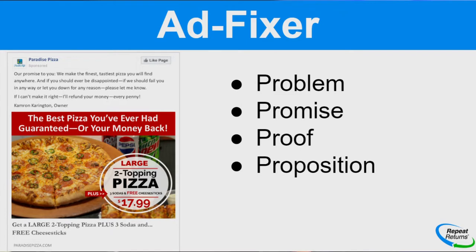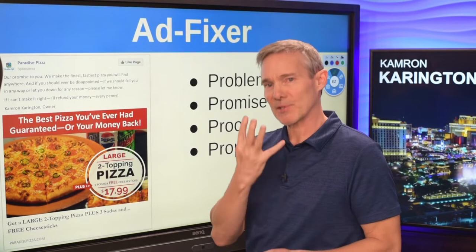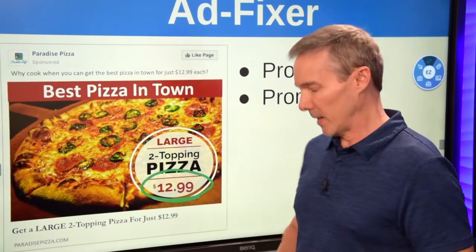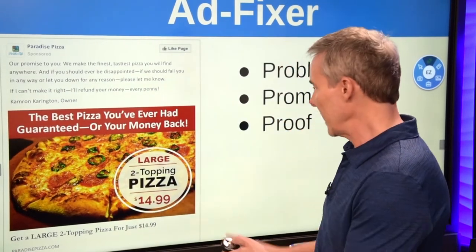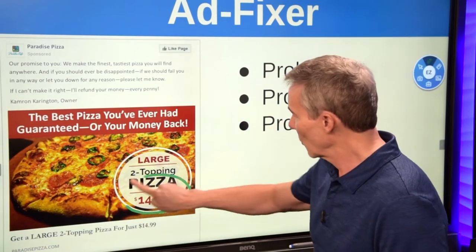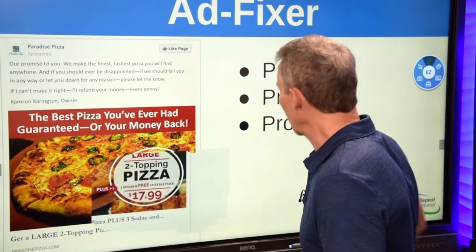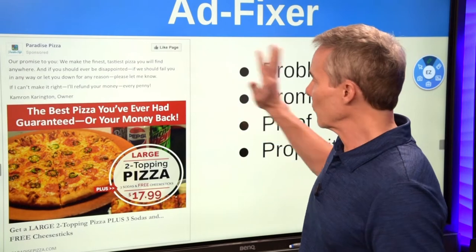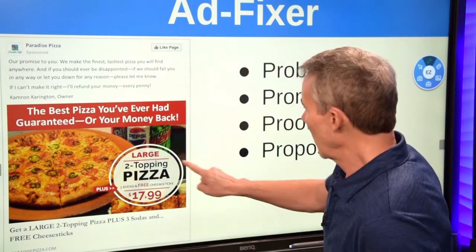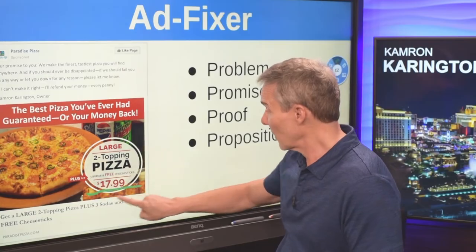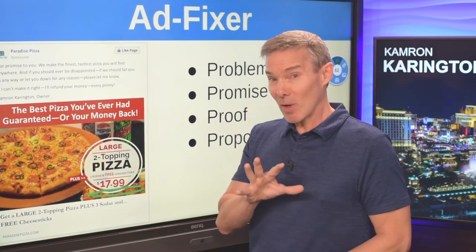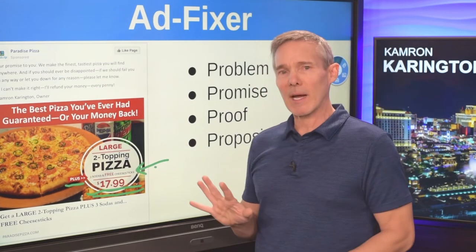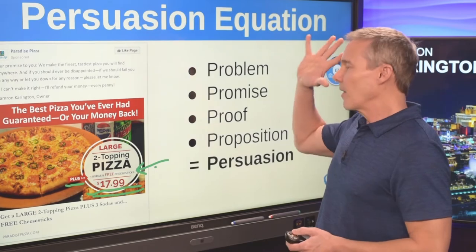The final part of the persuasion equation is to make the proposition. Notice what we've done: we started off at $12.99, but as we went from problem to promise to proof, we've now created more perceived value — we're up to $14.99. Now we're going to make the killer offer. This is the proposition. Large two-topping pizza, three sodas, and free cheese sticks — and what's this? $17.99. We started at $12.99 and we're up $5 now because of what we've done to amp up our ad. And notice that we're adding things as value-adds instead of discounting.